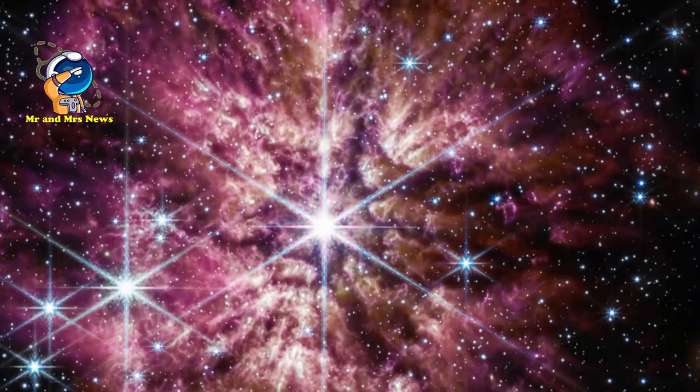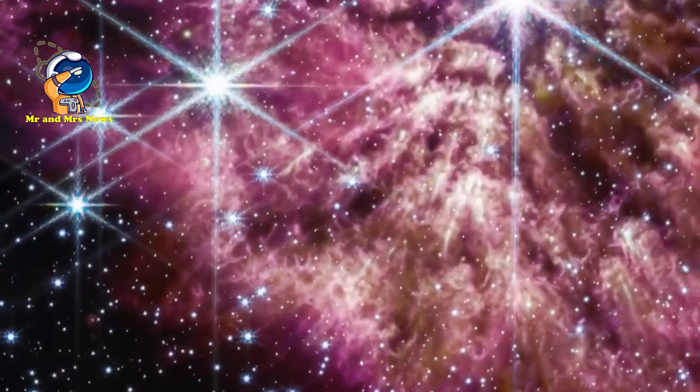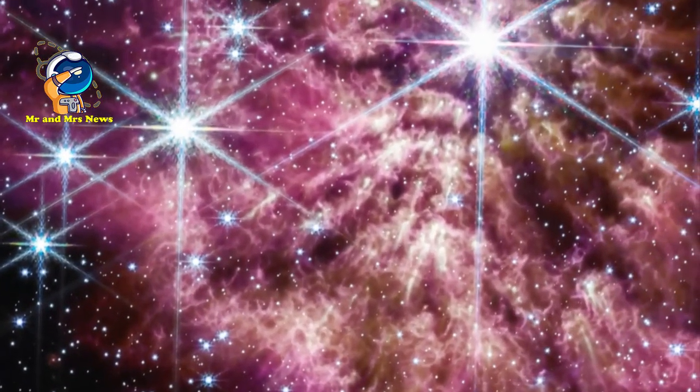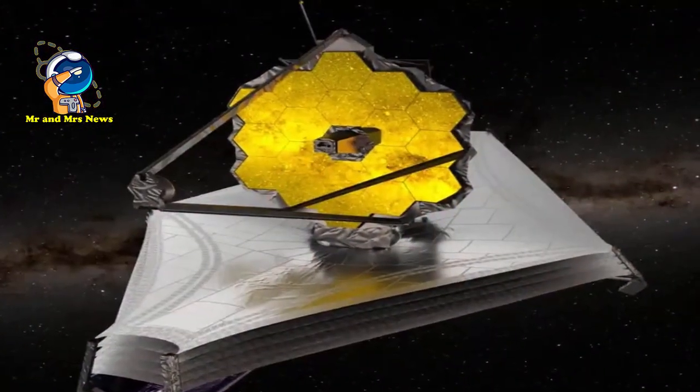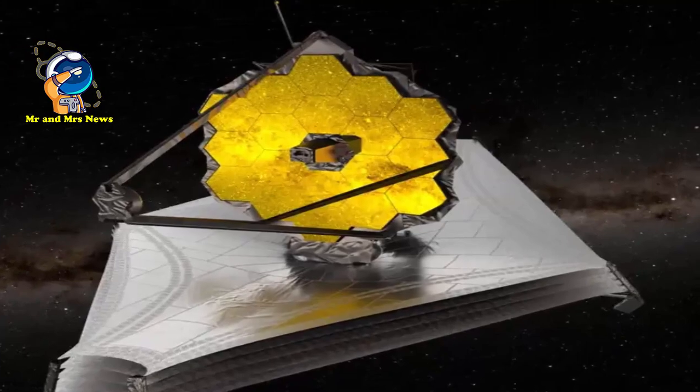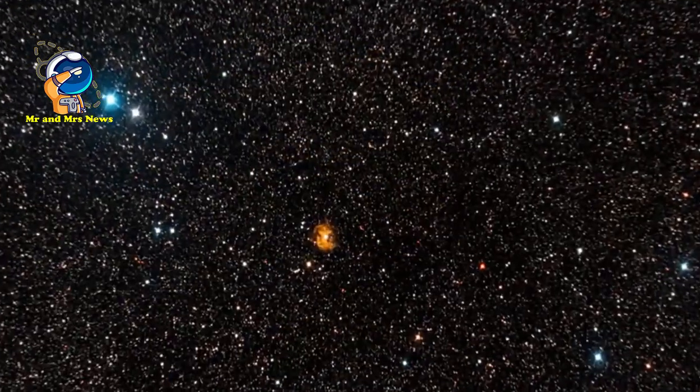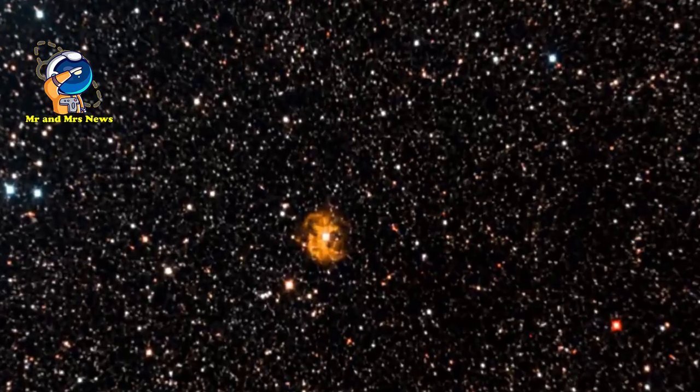Teleskop James Webb membuka kemungkinan baru untuk mempelajari detail dalam debu kosmik yang paling baik diamati dalam panjang gelombang cahaya inframerah. Kamera near infrared Webb atau NIRCam menyeimbangkan kecerahan inti bintang Wolf-Rayet 124 dan detail halus dalam gas yang redup di sekitarnya.